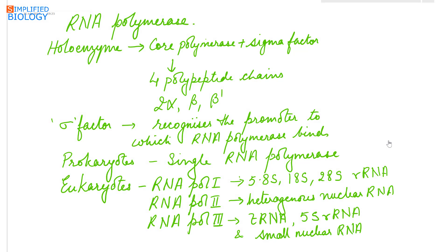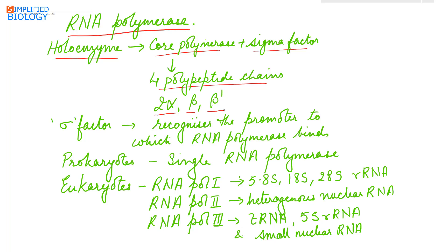Transcription occurs with the help of the RNA polymerase enzyme. RNA polymerase is a holoenzyme consisting of a core polymerase plus a sigma factor. The core polymerase consists of 4 polypeptide chains: 2 of alpha type, 1 beta, and 1 beta prime. The sigma factor attached to the core polymerase forms the complete RNA polymerase, and it helps in recognizing the promoter on the DNA to which RNA polymerase binds, after which the sigma factor is released.